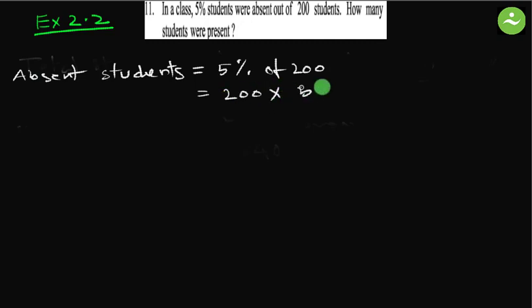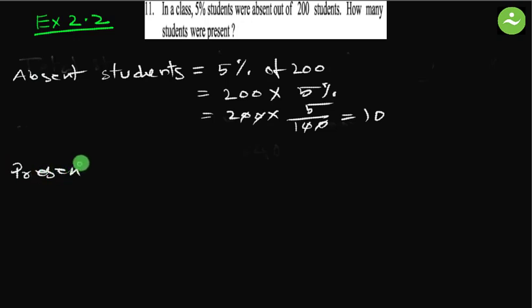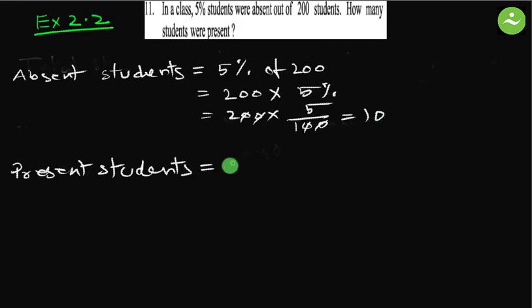Absent students equals 200 multiplied by five divided by 100. Simplify — double zero and double zero cancel — five into two is 10. So absent students are 10. Now we can find out present students. Present students will be 200 minus 10. If we deduct 10 from 200, we get the number of students present.